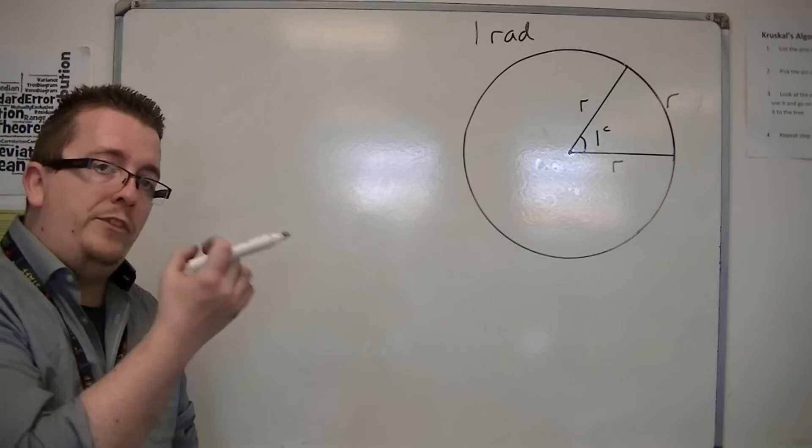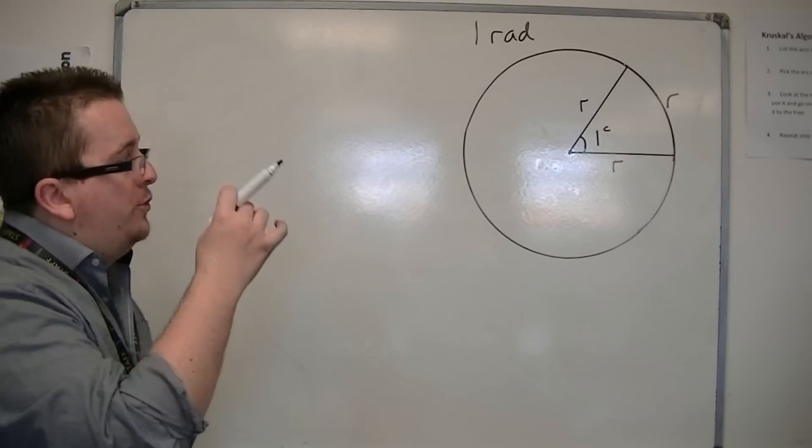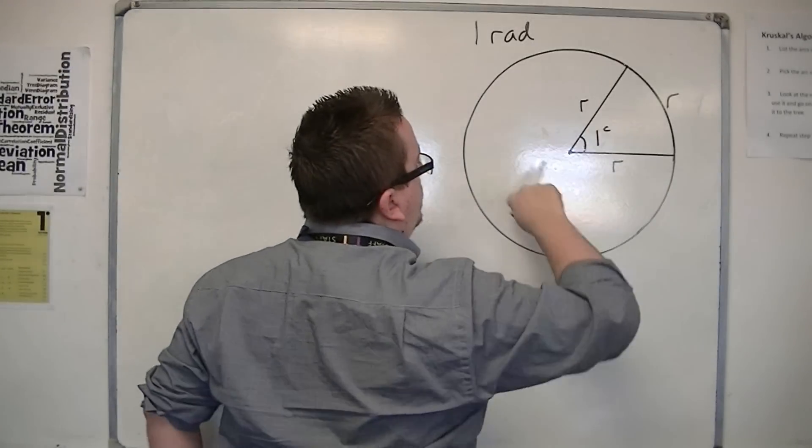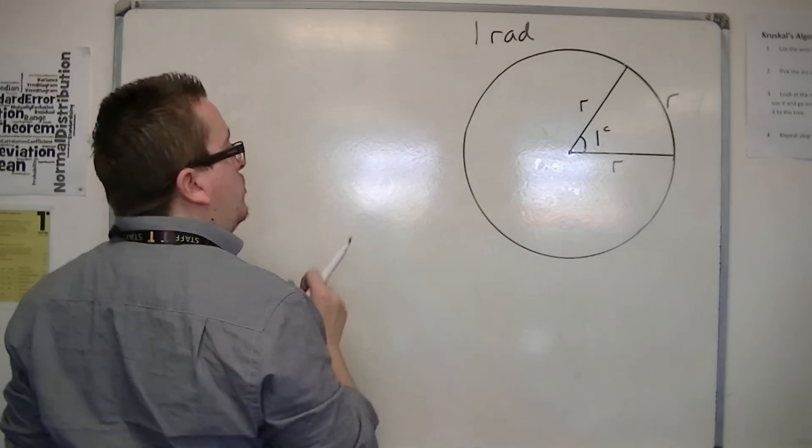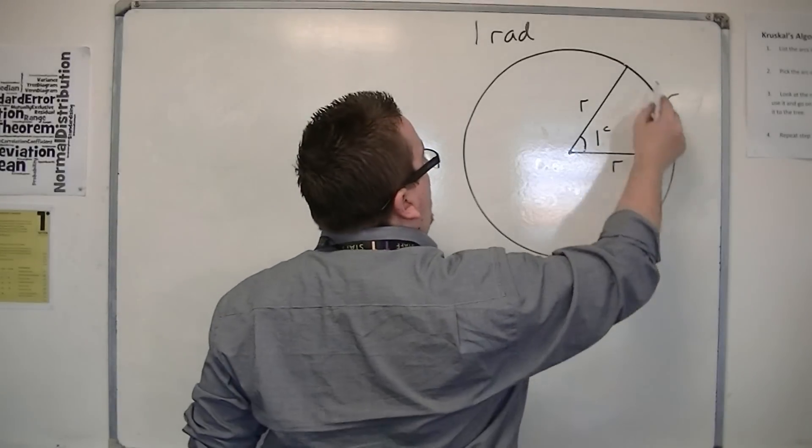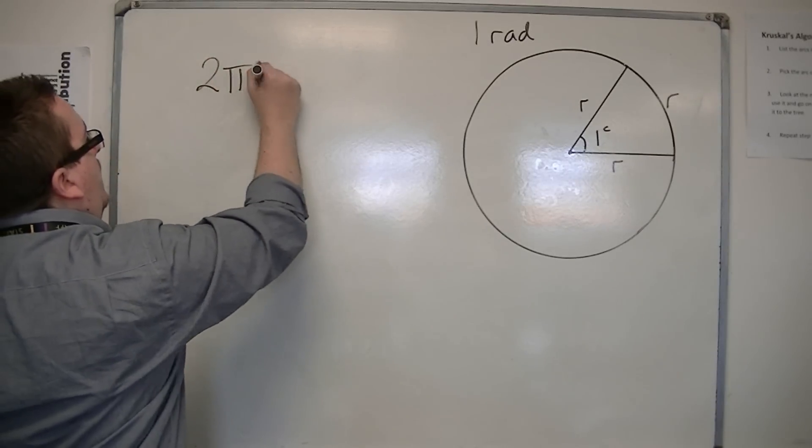So that 6 and a bit is actually 2 pi. You can fit this into the circle 2 pi times. So in actual fact, all the way around this circle will be 2 pi r.